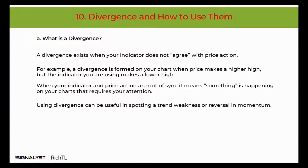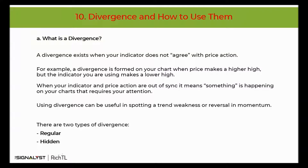Using divergences can be useful in spotting a trend weakness or reversal in momentum, and sometimes divergences can be used as a signal of trend continuation. The indicators used to spot divergences are MACD, RSI, Stochastic, and CCI. There are two types of divergences: regular and hidden. We'll focus on the regular divergences for now and go over the hidden divergences in the next module. A regular divergence is used as a possible sign for a trend reversal.